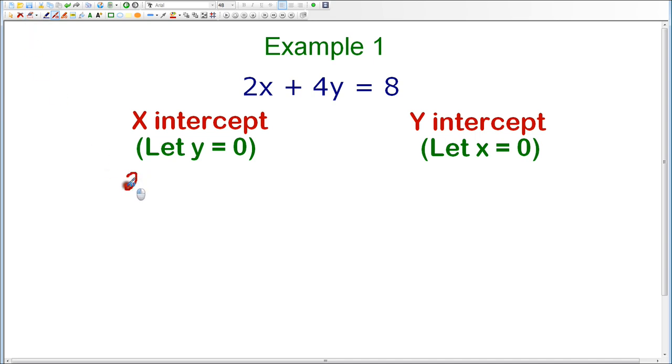So what we're going to do is we're going to take the original equation, 2x plus 4y equals 8, and what we're going to do is let y equals 0. So when we do that, we have 2x plus 4 times 0 equals 8. So all I've done is substitute 0 for y. 4 times 0 is 0, so this term is eliminated. We're left with 2x equals 8.